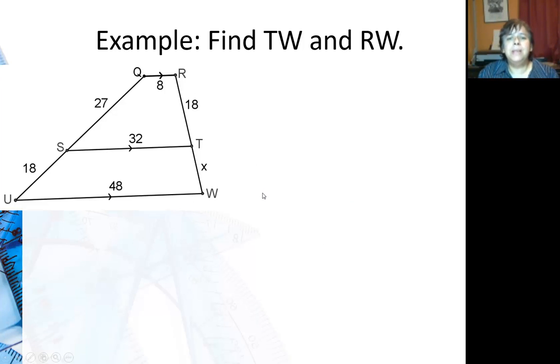In this example, we are going to look for TW, which is X, and RW. I can set up a proportion: 27 is to 18 as 18 is to X.